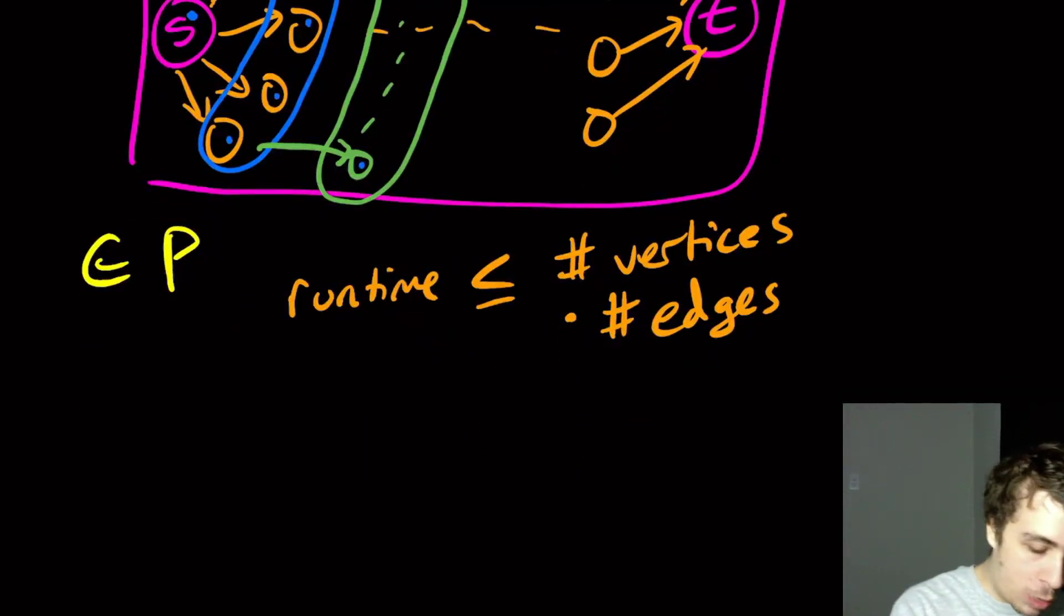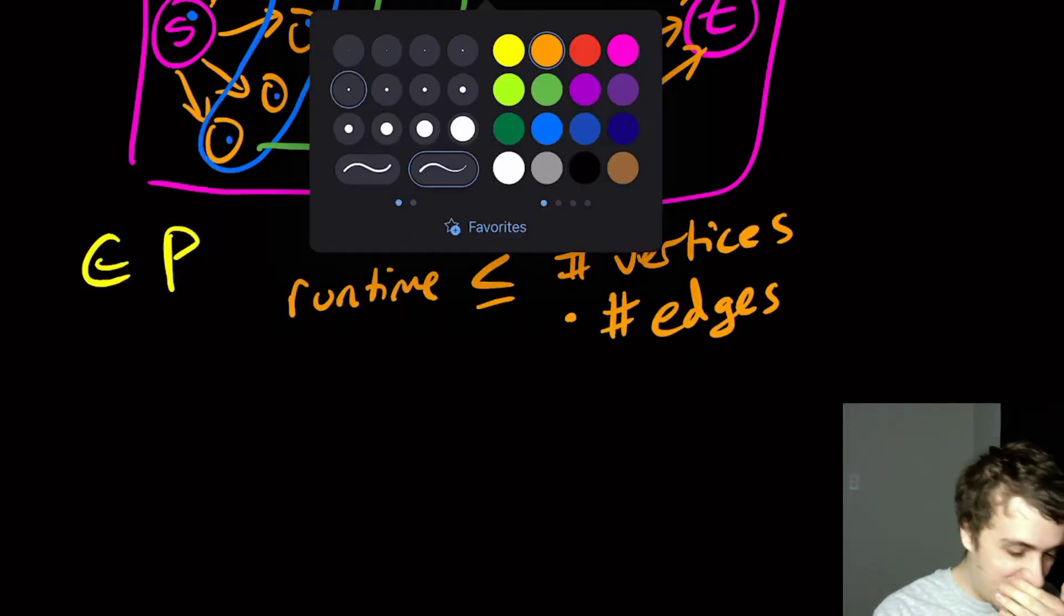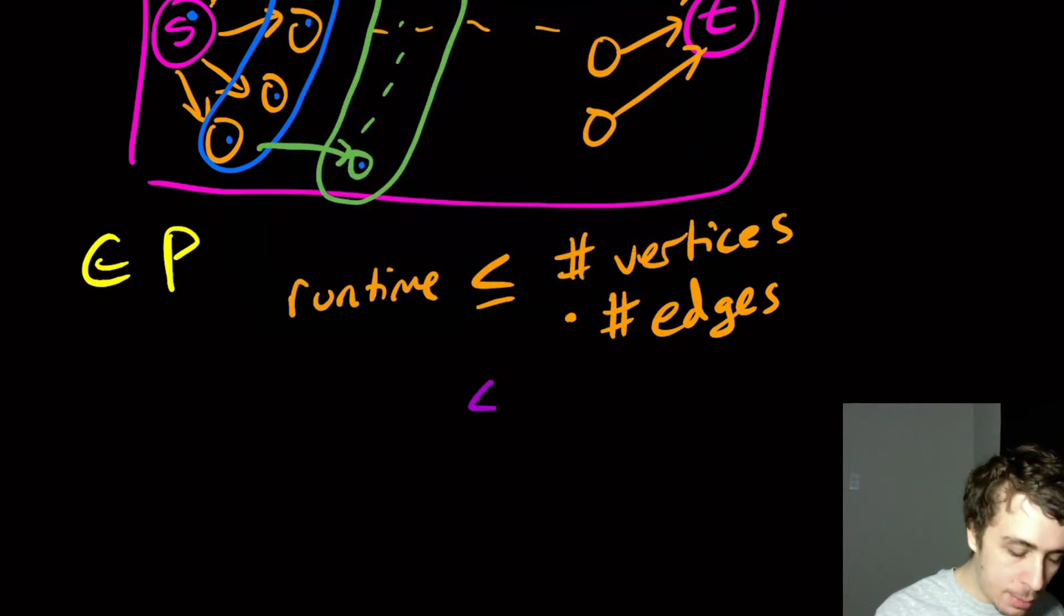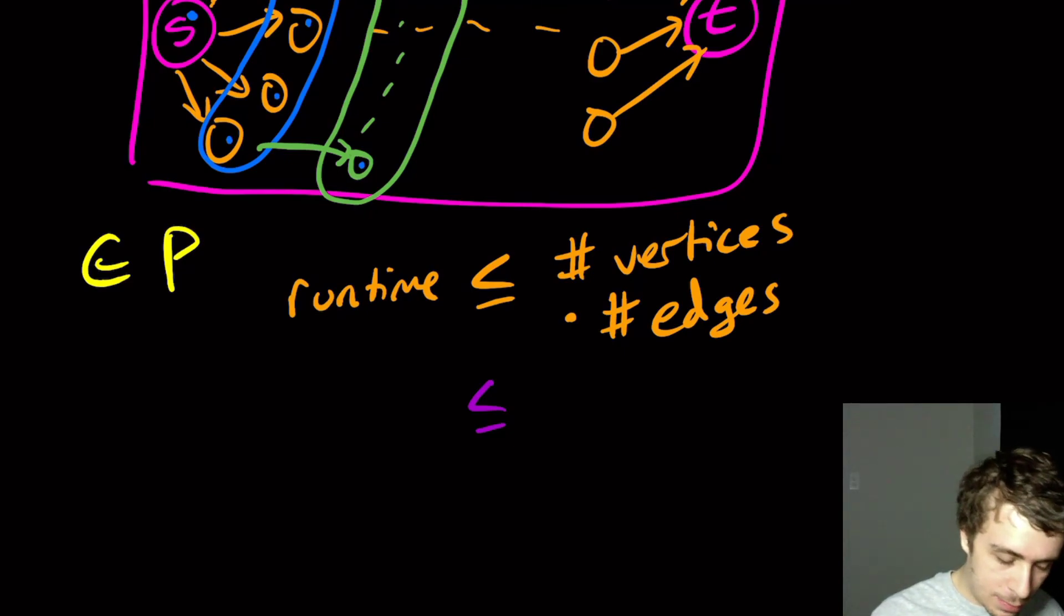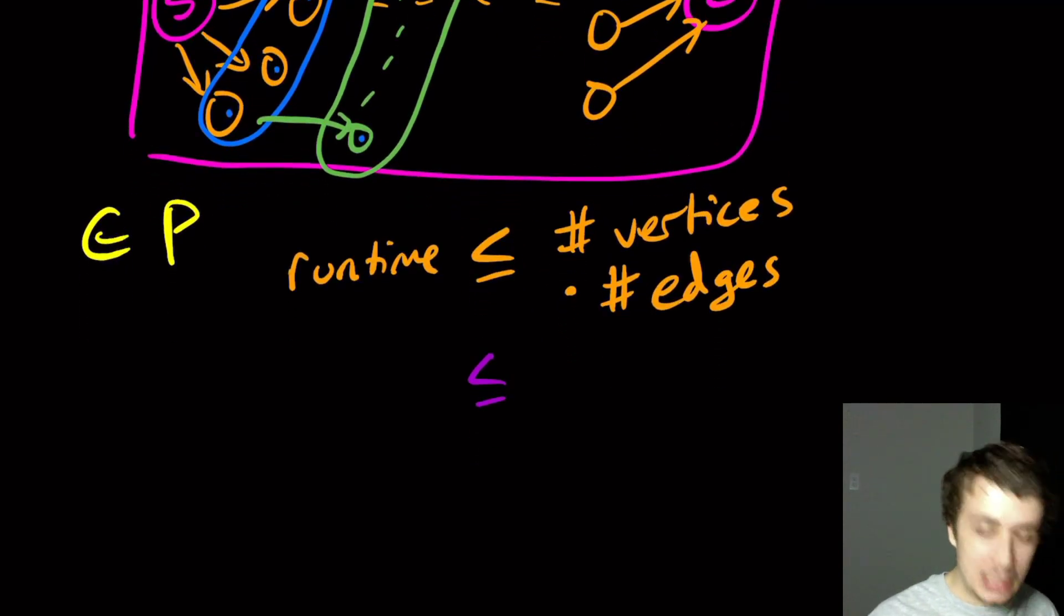And the graph, it depends on what you want to actually count for the size of the graph. But we usually represent it by the size of the number of edges because each of the edges includes the vertex, unless you want to include the vertices in addition to that, in the case that there are some vertices that don't have edges with them. But beside the point. So here, this actually runs in polynomial time because the number of edges is at most the square of the number of vertices.